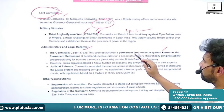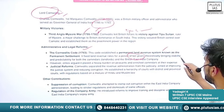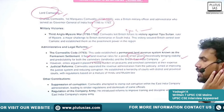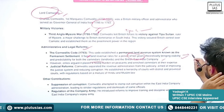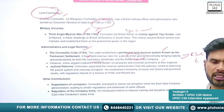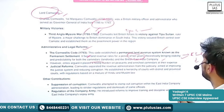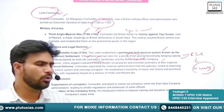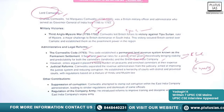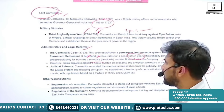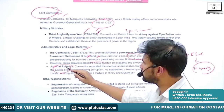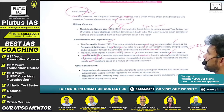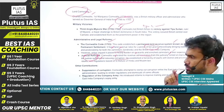Cornwallis fixed the land revenue rate for a period of 10 years. This brought stability and predictability for both zamindars and the British East India Company — the Company had a fair idea of how much revenue would come in the next 10 years, and zamindars knew their income. Apart from that, he introduced judicial reforms — separating revenue administration from the judiciary — aimed at improving the justice system and reducing corruption.